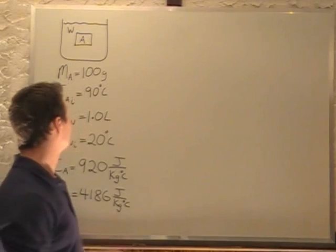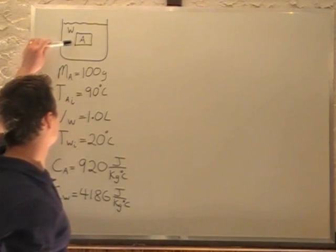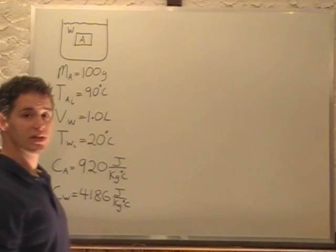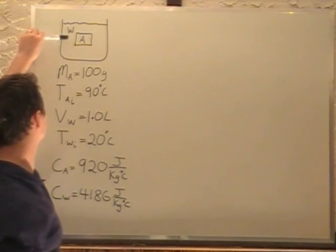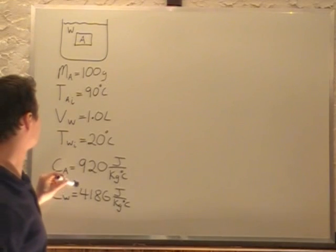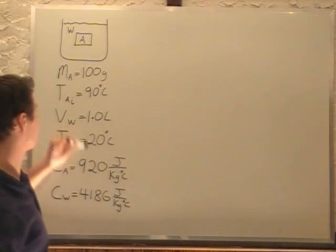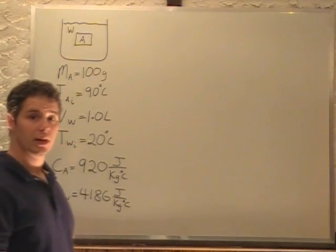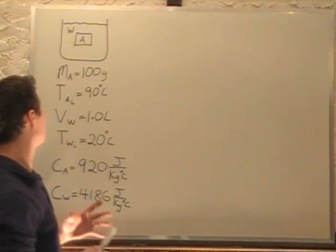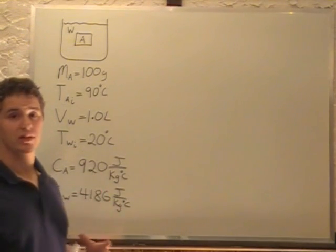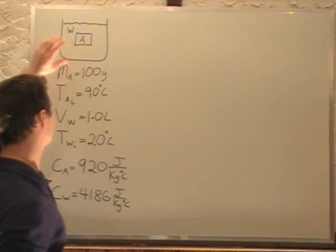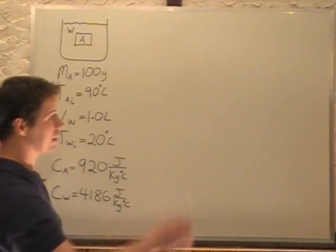In this problem, we have a 100 gram piece of aluminum that is at 90 degrees Celsius and it's put into a beaker of water — one liter of water — and the water is at 20 degrees Celsius. We're asked to find the final temperature at equilibrium of the system, assuming you don't lose heat to the container or the air surrounding everything.